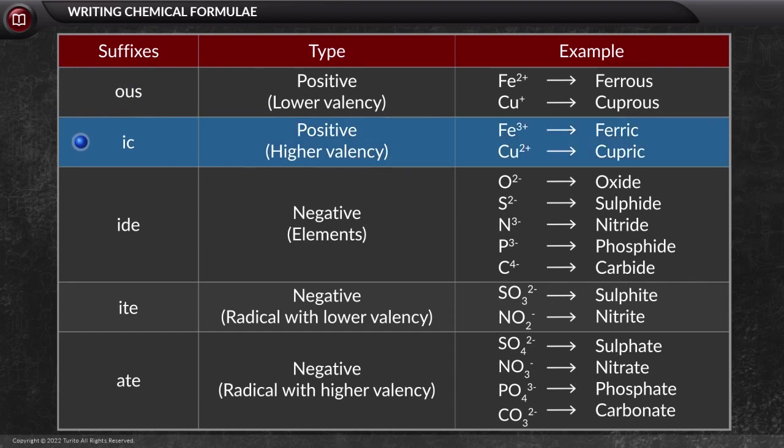Next is 'ic', that is used for positive higher valency. For example, Fe with valency 3 is ferric, and copper with valency 2 is cupric.